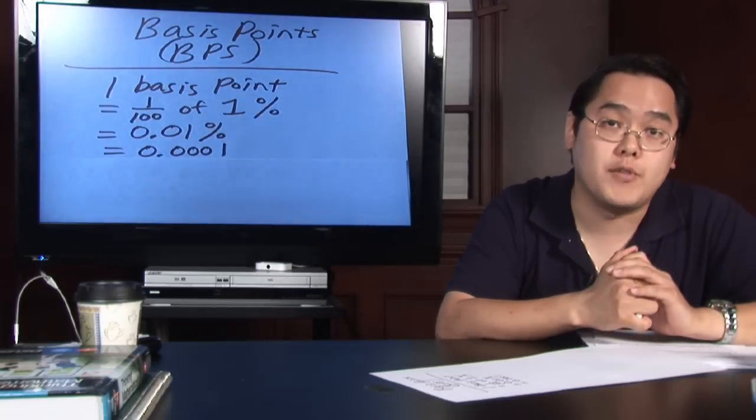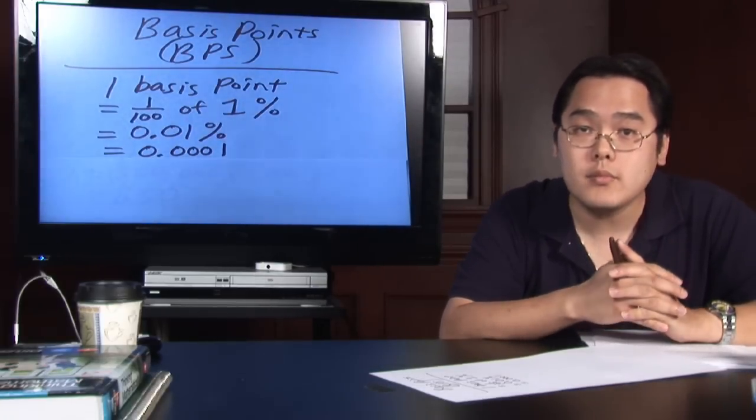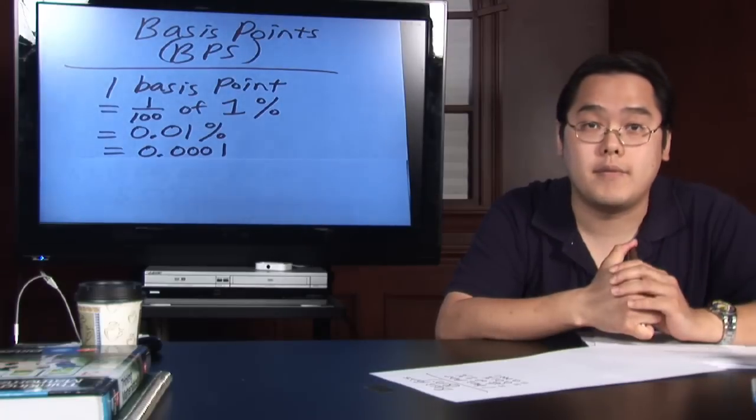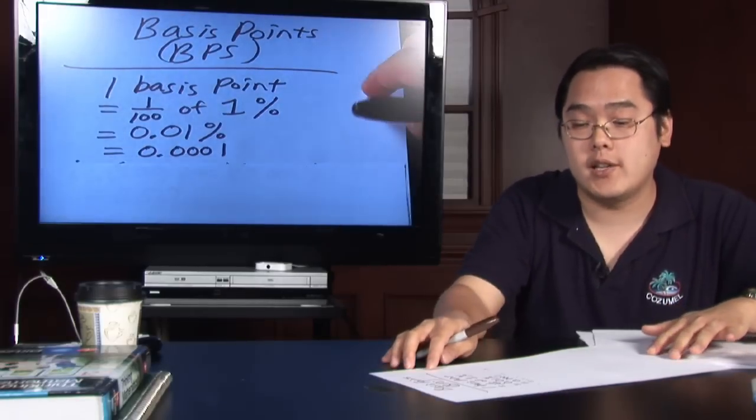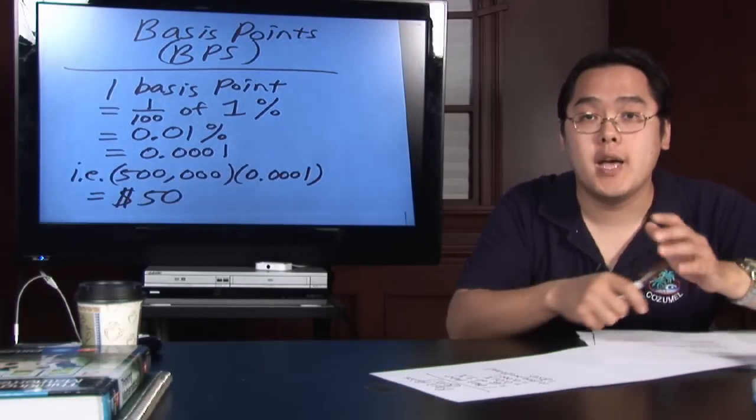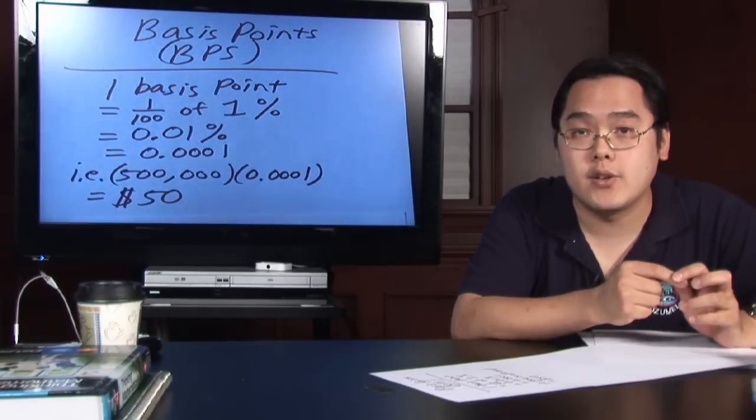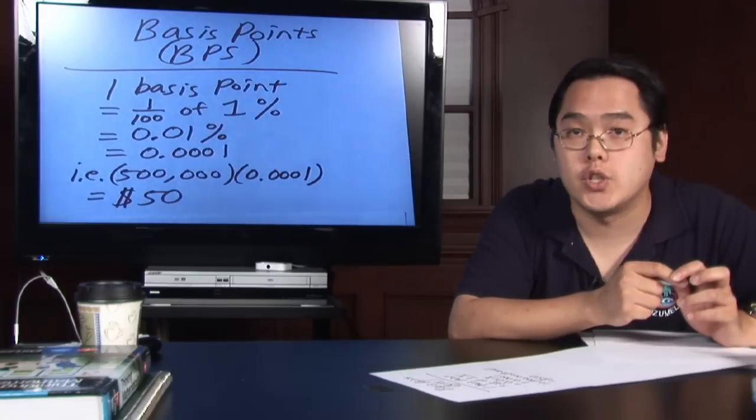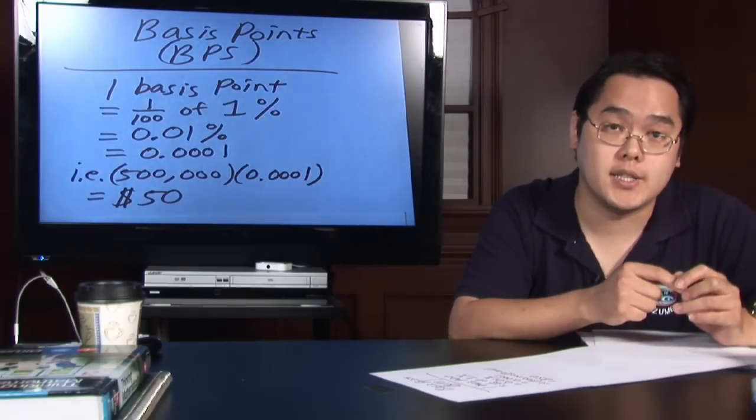For an example, if you wanted to figure out a commission of, let's say $500,000, if you multiply by how much a basis point is worth, you take 500,000 and multiply by 0.0001 and you will get $50.